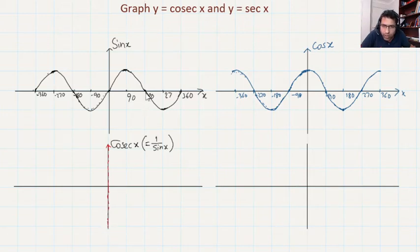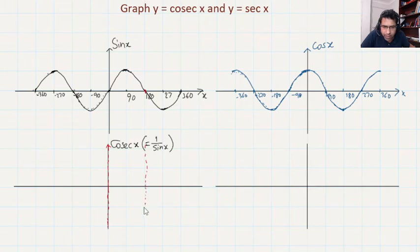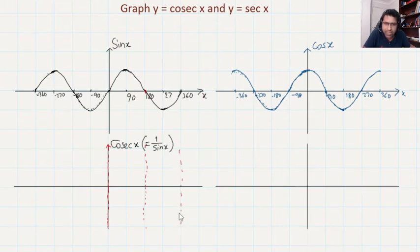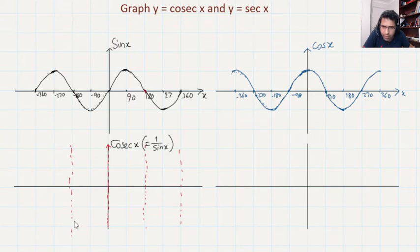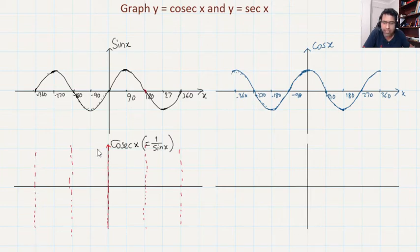Sine X is also 0 at 180 degrees, so we put a vertical asymptote at 180 degrees. Then at 360 degrees there is another vertical asymptote. Going in the negative direction, we also have vertical asymptotes at negative 180 degrees and negative 360 degrees, because sine X equals 0 at those positions, making the denominator 0.